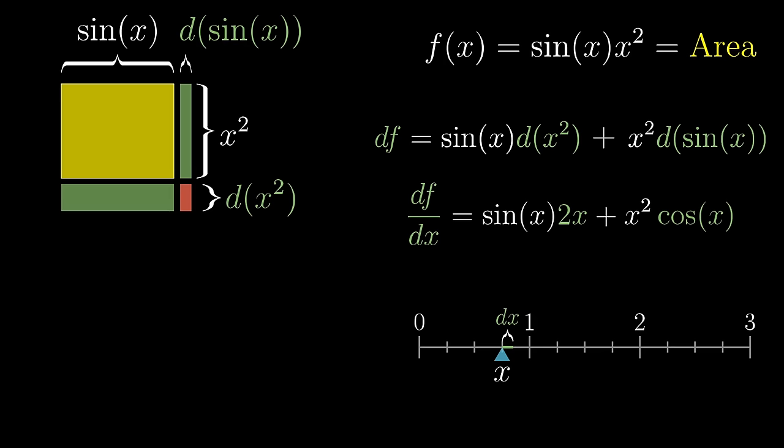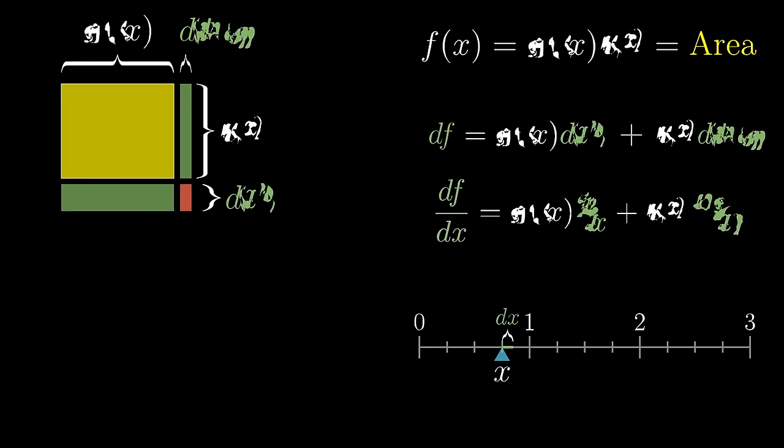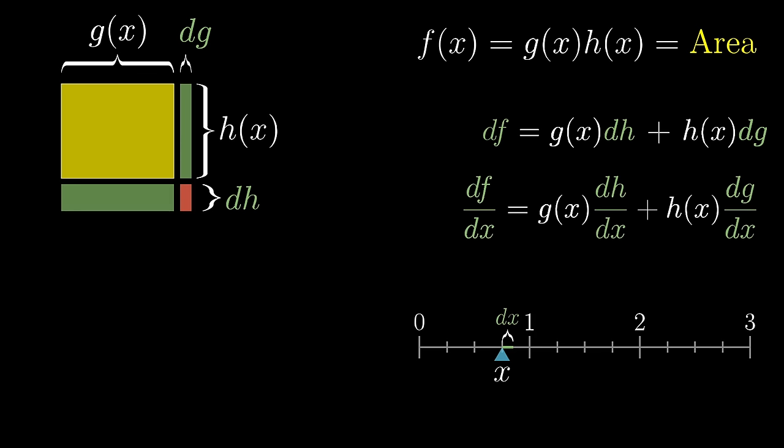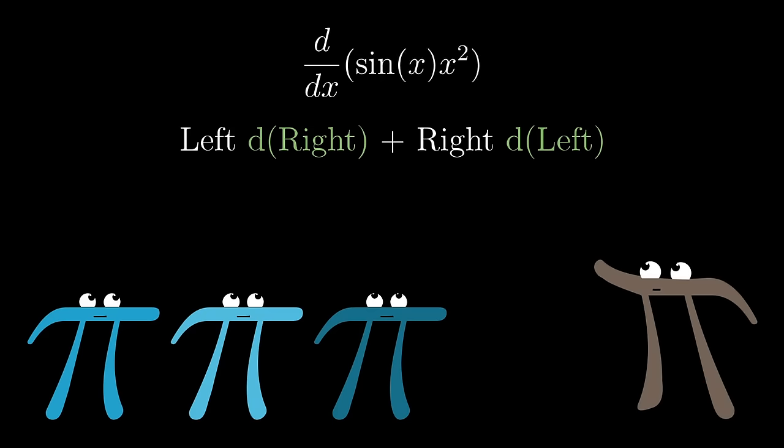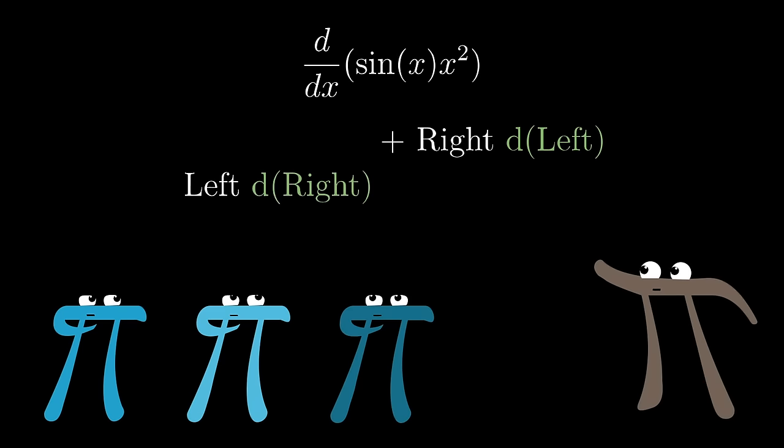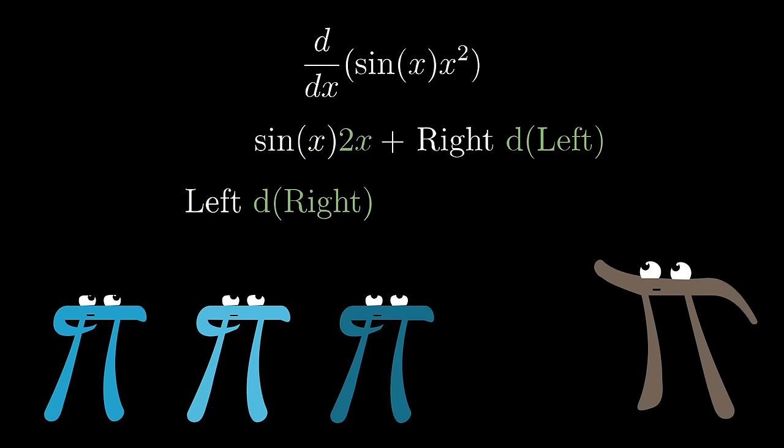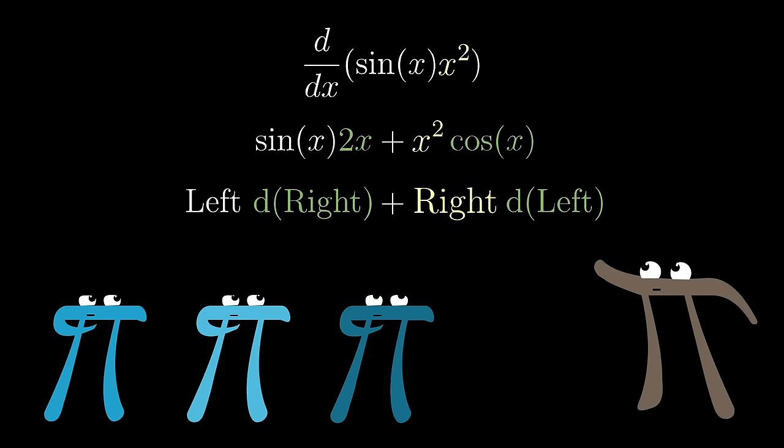And nothing we've done here is specific to sine or to x squared. This same line of reasoning would work for any two functions g and h. And sometimes people like to remember this pattern with a certain mnemonic that you kind of sing in your head: left d right, right d left. In this example where we have sine of x times x squared, left d right means you take that left function, sine of x, times the derivative of the right, in this case 2x. Then you add on right d left: that right function, x squared, times the derivative of the left one, cosine of x.